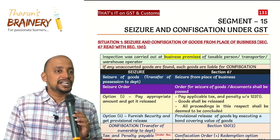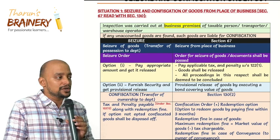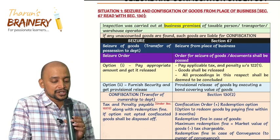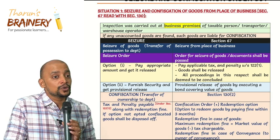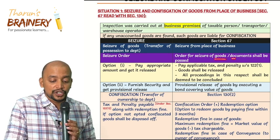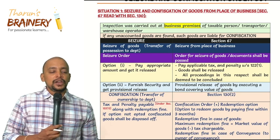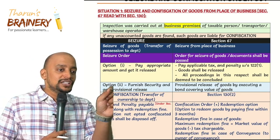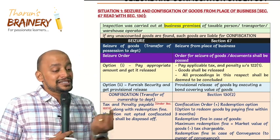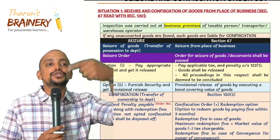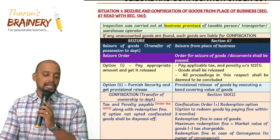Whenever they identify such goods, they will immediately pass a seizure order to seize the goods from the place of business — meaning to transfer possession to the department. Once they pass the seizure order, they will not only seize the goods but also seize the documents which contain the details of those goods. For example, the taxpayer may maintain a diary where all unaccounted transactions are noted — that diary will be seized, as it contains information about to whom he sold and how much cash he collected. That is what is meant by documents containing details of goods liable for confiscation.